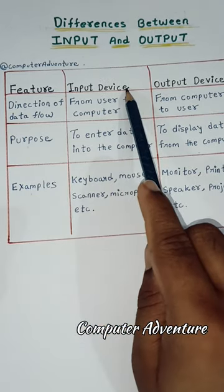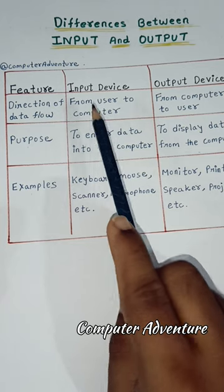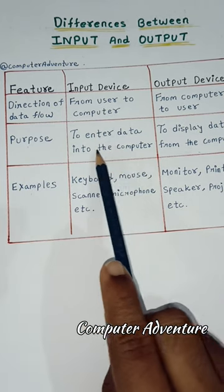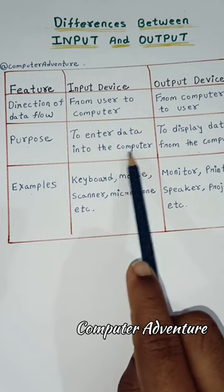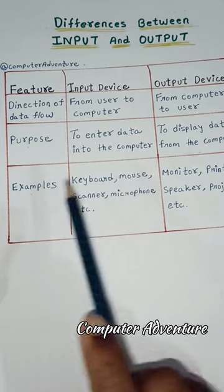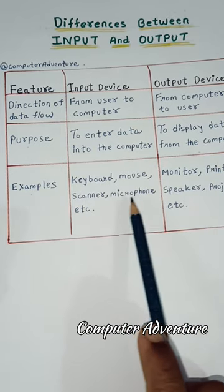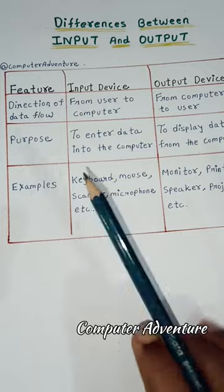Input device: direction of data flow — from user to computer. Purpose: to enter data into the computer. Examples: keyboard, mouse, scanner, microphone, etc.